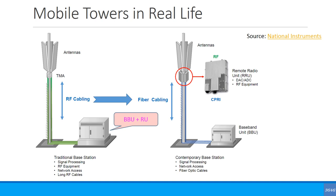The connection between the BBU and the RRU is generally through fiber. Earlier it was RF cables, but now it's fiber, and the protocol used for that interface is called CPRI. CPRI requires a very high-bandwidth connection, so you need fiber — especially when you have multiple RRUs carrying a lot of data, requiring dark fiber connectivity between the BBU and the remote radio unit.